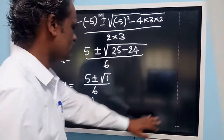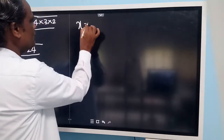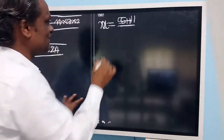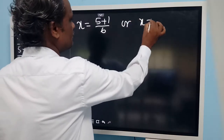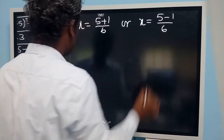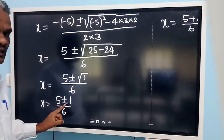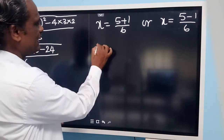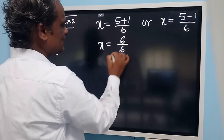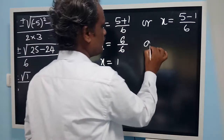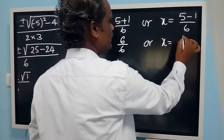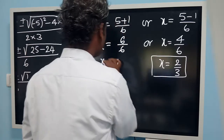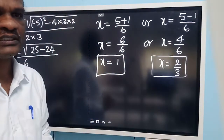So we have two solutions: x equals 5 plus or minus 1, divided by 6. That gives x equals 5 plus 1 over 6, which is 6 over 6, so x equals 1; or x equals 5 minus 1 over 6, which is 4 over 6, so x equals 2 over 3. These are the solutions of this quadratic equation, solved using the quadratic formula.